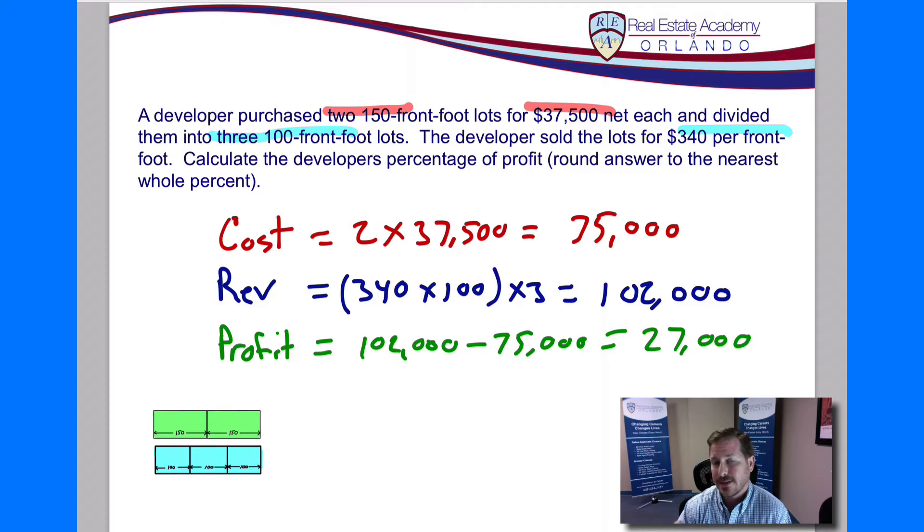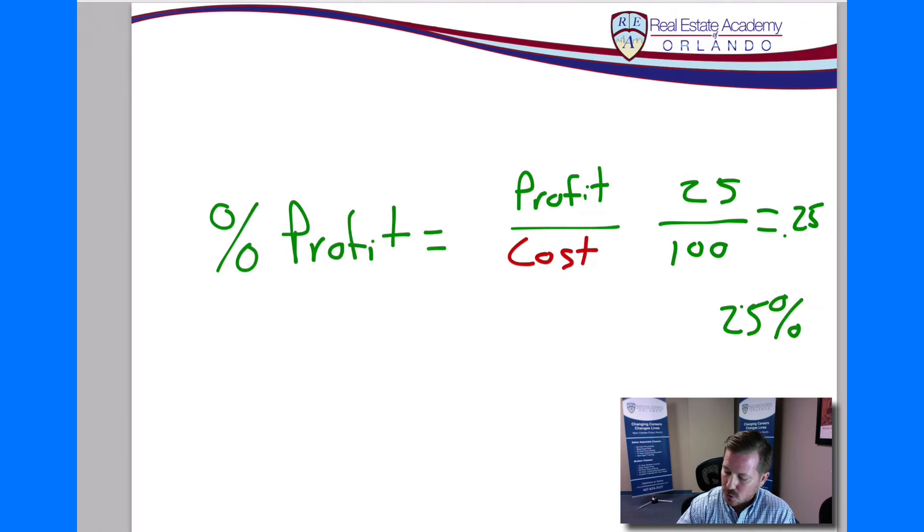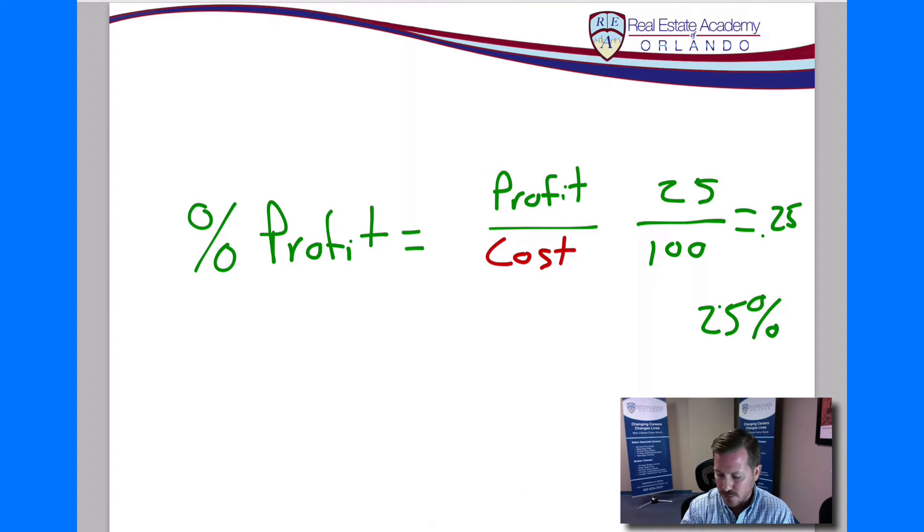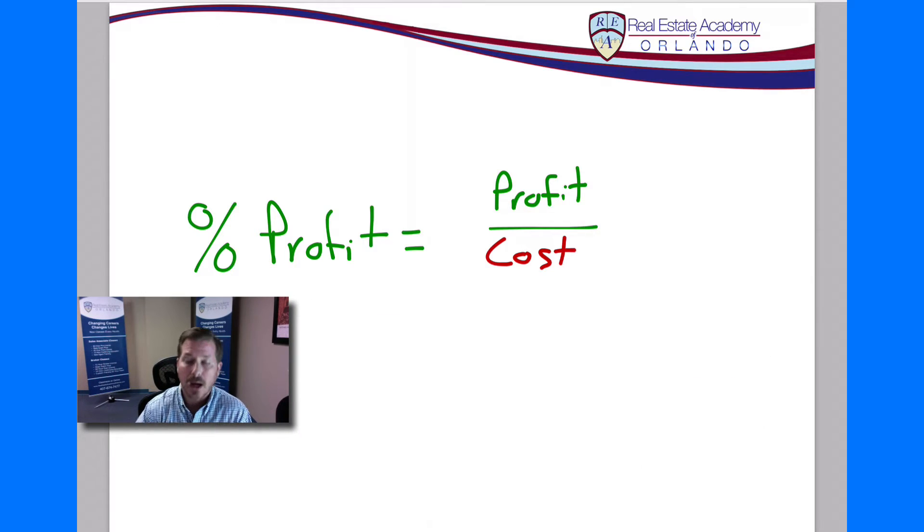Now, we are not done yet because we're not looking for the profit for the developer, we're looking for the percentage of profit. So we have to make sure we go back to our formula that we had over here. Profit divided by cost. Now, this is where I see a lot of students who make a mistake. They may stop once they figure out the profit, and that may be one of the answers, but it's probably an incorrect answer because the question is asking for percentage of profit.